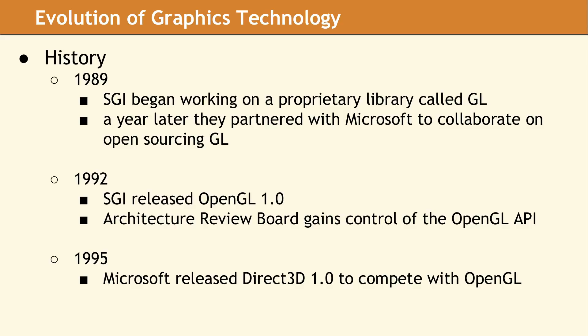Both SGI and Microsoft were voting members of the ARB, as well as several other interested parties. In 1995, Microsoft released its own API called Direct3D in direct competition with OpenGL, which was a bit odd and seemed like a conflict of interest.